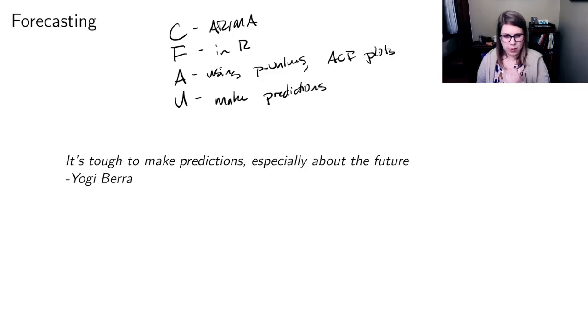So there's this apocryphal quote by Yogi Berra that it's tough to make predictions, especially about the future. And I think if you're kind of a lay person, maybe that quote is a little bit funnier than it is for a statistician. For statisticians, we're often making predictions that aren't about the future.